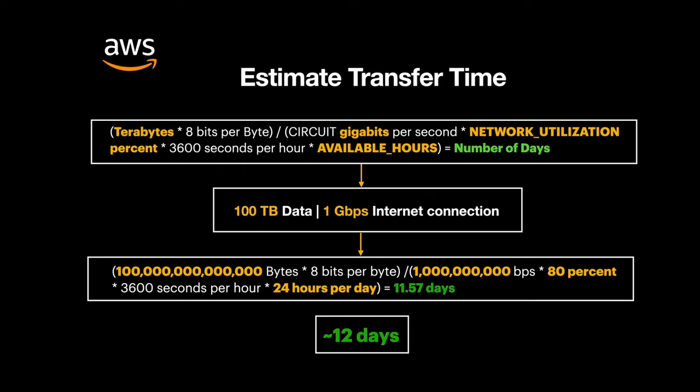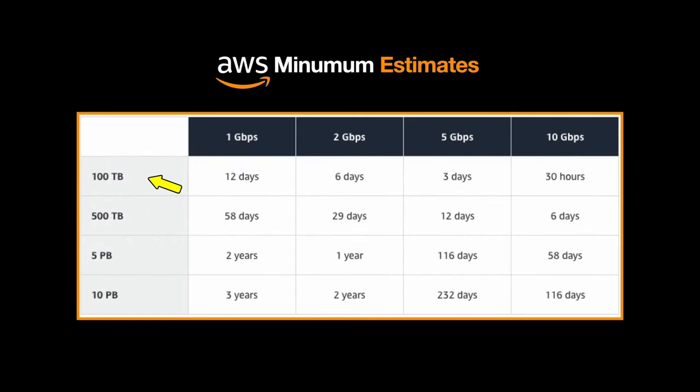A generalized table shows that 100 TB at 1 Gbps takes about 12 days, 500 TB at 1 Gbps takes about 58 days, and data in the petabyte range at 1 Gbps can take around 2 years. Even with a good 10 Gbps connection, 10 petabytes still takes about 58 days. If during your calculation you see such huge timelines that are not affordable, or your data goes beyond what this table covers, the AWS Snow Family devices will be well suited.